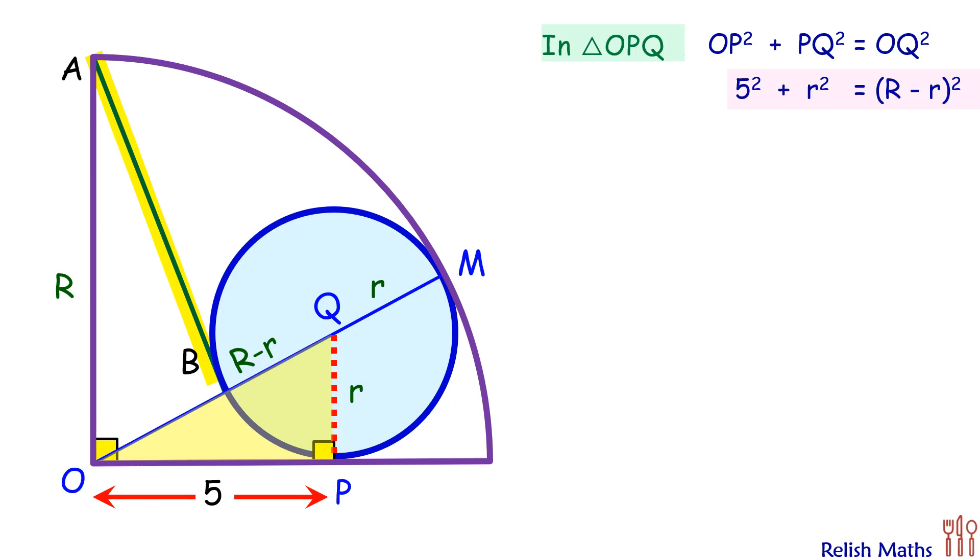Let's form another triangle. For our next triangle, let's join point B and Q. Now BQ is radius and radius is perpendicular to tangent, so this angle B is 90 degrees.